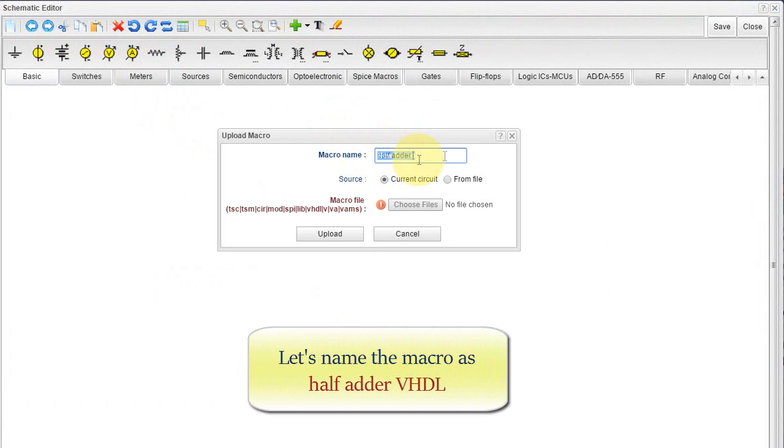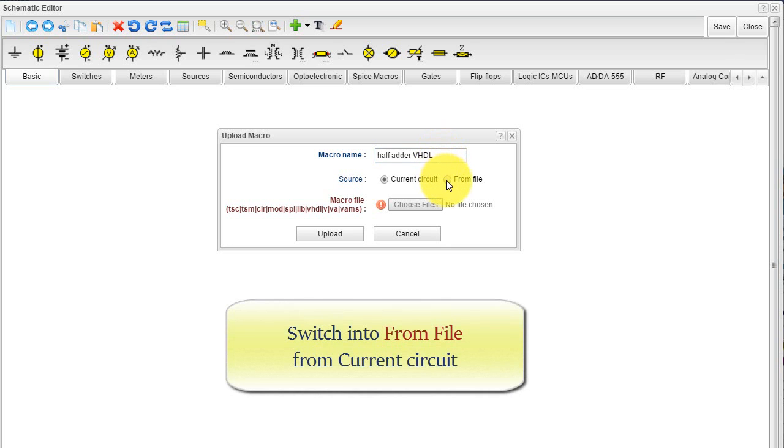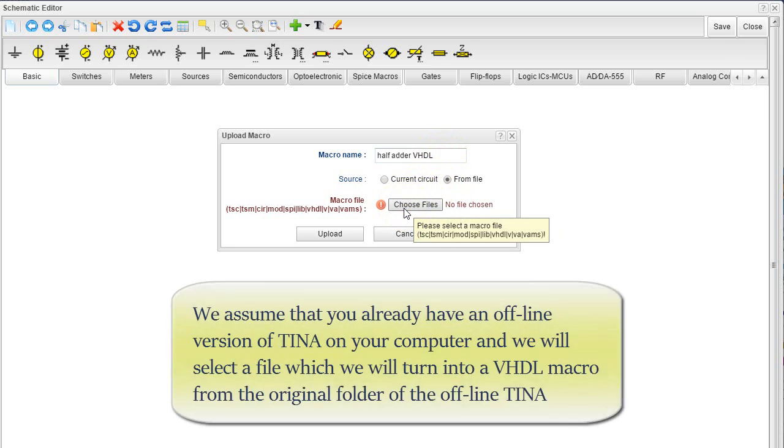Let's name the macro as half adder VHDL. Switch into From File from Current Circuit. We assume that you already have an offline version of Tina on your computer, and we will select a file which we will turn into a VHDL macro from the original folder of the offline Tina.